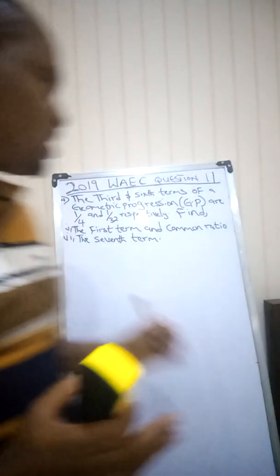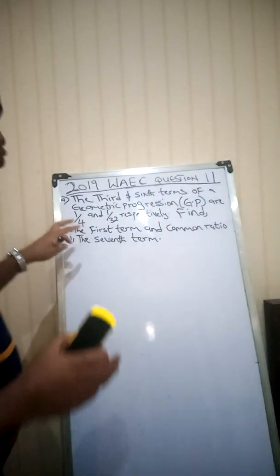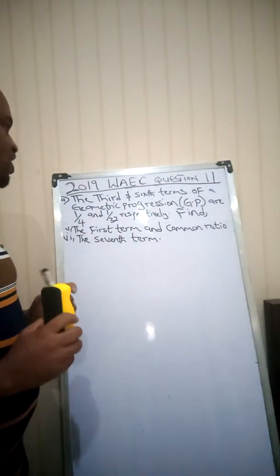All right students, you're welcome once again to my channel. My name is Madwako Emanuel, your favorite math teacher. Today we shall be looking at question 11 of the 2019 BECE examination, and question 11 is a question on geometric progression.